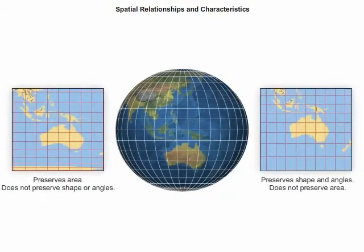No map projection allows all spatial characteristics to be preserved on a single map. Different projections attempt to preserve different characteristics.